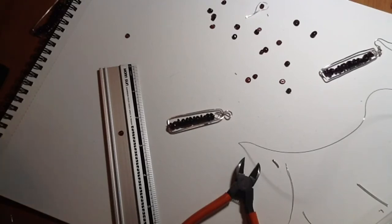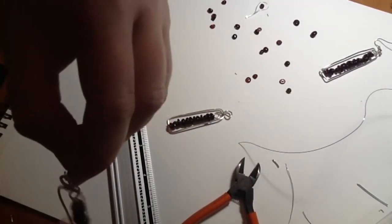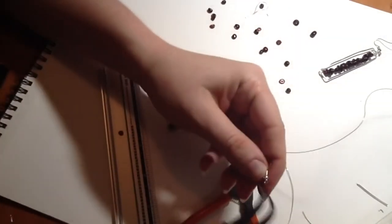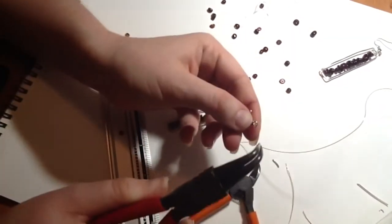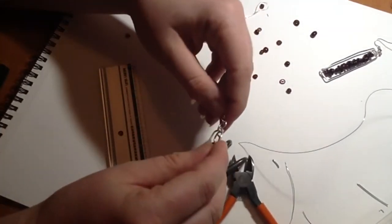What you want to remember with your earring hooks, if you're using pre-made hooks, is that you should always open them to the side rather than trying to open them up like that, because that will weaken them.